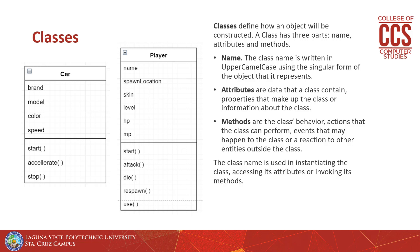The box is divided into an upper and lower section. The upper section is for attributes — data that a class contains, properties that make up the class, or information about the class. The lower section is for methods — the class's behavior, actions that the class can perform, events that may happen to the class, or a reaction to other classes.